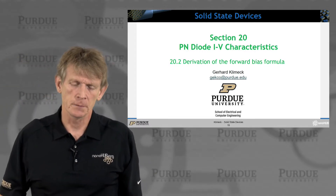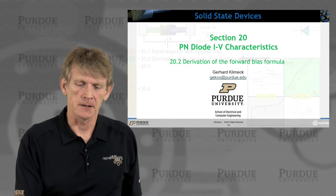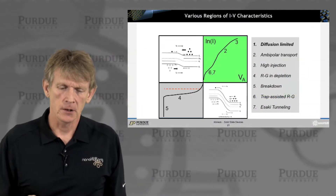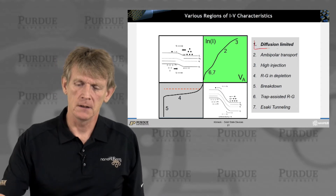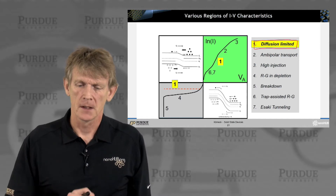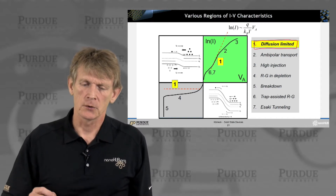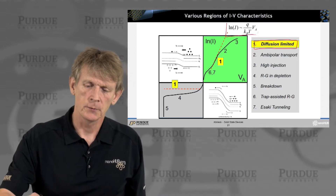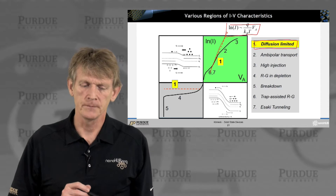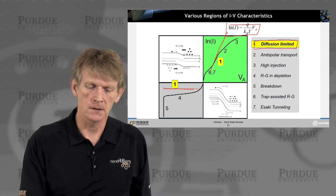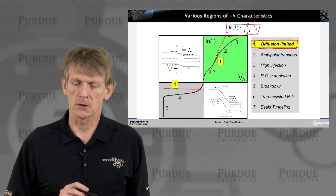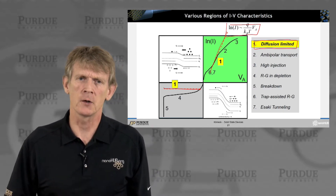Let's derive the forward bias formula for a PN junction. We're going to focus on the diffusion-limited case, which has a slope of one. In this region you take a slope and it has a slope of one, and ideally it has a constant voltage-independent reverse bias current. So let's derive the formula for this case.